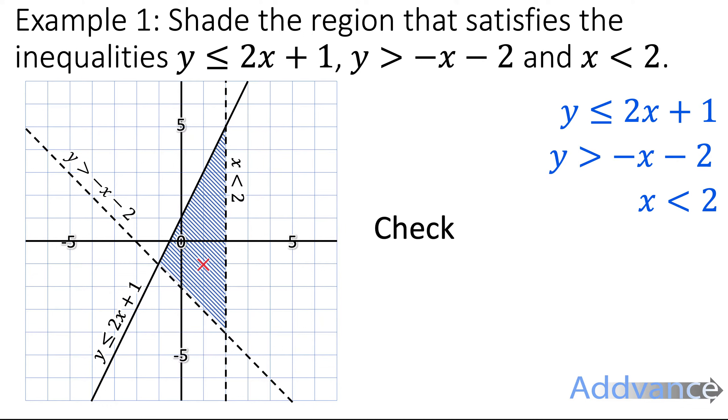Now you've got an answer and we can check. To check, we're going to choose a point inside that inequality. I've chosen this point here, which is 1 across, -1 down. x = 1, y = -1.